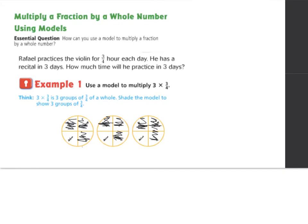So we can show our work off to the side using our model to help us. Each day for three days, Raphael practiced for three-fourths of an hour. So we can show this as three groups of three-fourths. Our final step in this problem is we need to multiply the whole number — which is his three days — times the parts of the hour that he was practicing. So we'll multiply three times three-fourths to give us a total of nine-fourths.